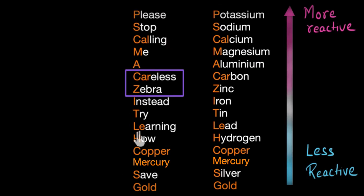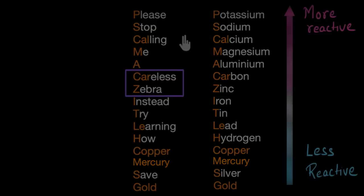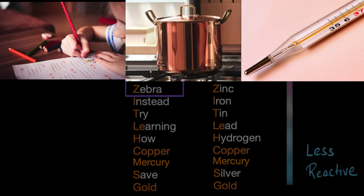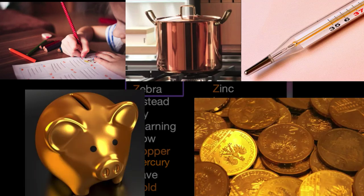Now this helps me remember the order of the metals in the reactivity series. For example, with the first letter of please, I remember potassium. With the first letter of stop, I remember sodium. From cal of calling, I remember calcium, and so on and so forth. So you can also use the same mnemonic to remember these metals. Let's recall this one more time: Please stop calling me a careless zebra. Instead, try learning how copper mercury save gold.